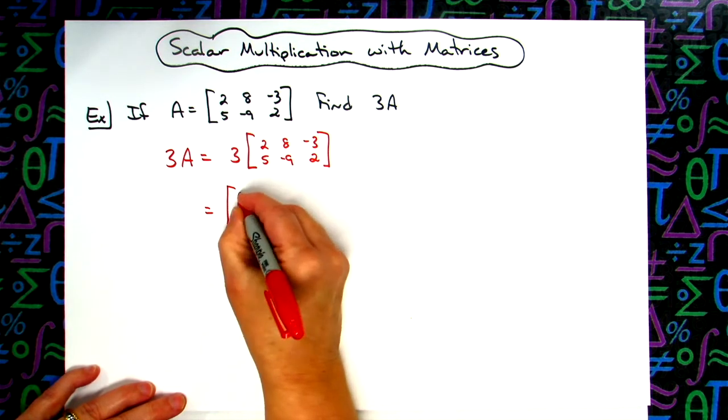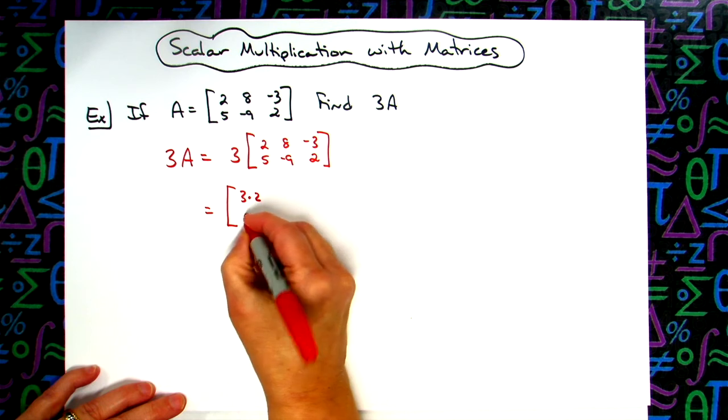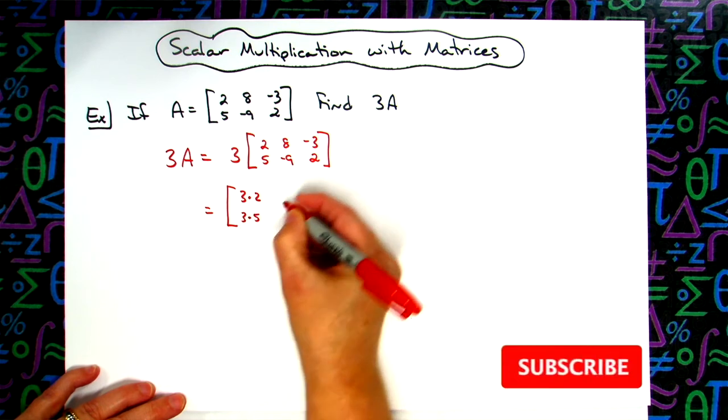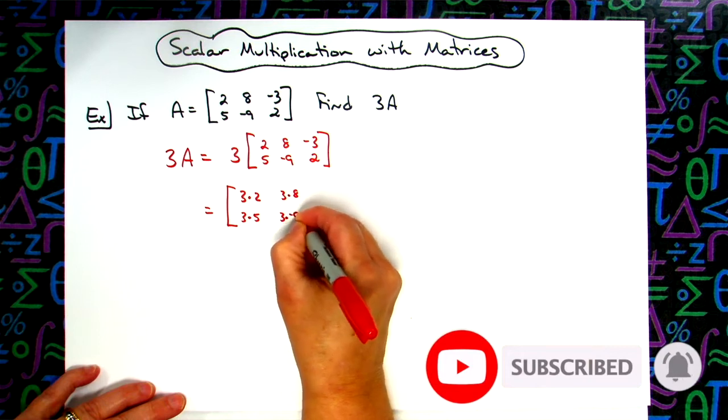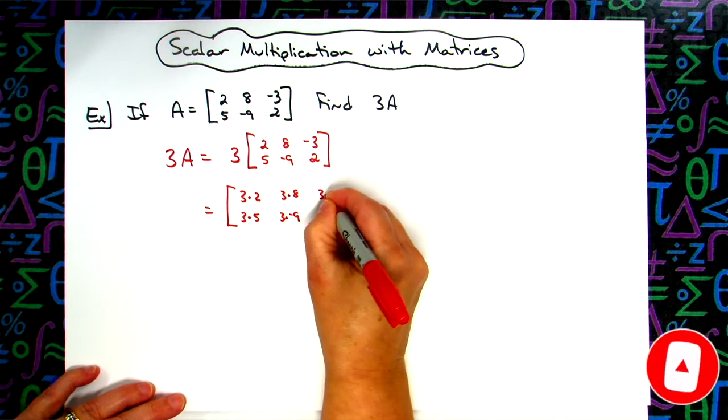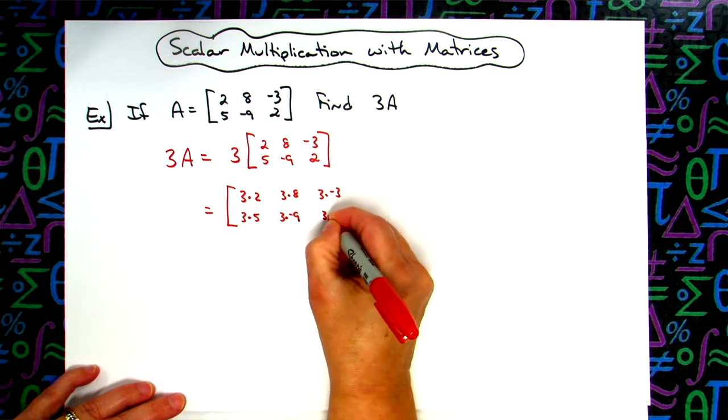So I'll have a 3 times a 2 and then a 3 times a 5. We'll have a 3 times an 8 and 3 times that negative 9. We'll have the 3 times the negative 3 and the 3 times the 2.